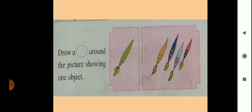In the first box we can see one brush. And in the second box, count them: one, two, three, four. The question is: draw a circle around the picture showing one object. We can see the green color brush in the first box, which we have to circle.